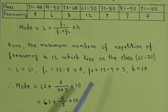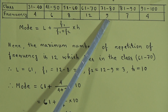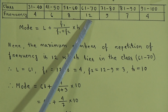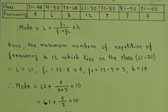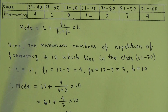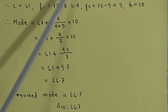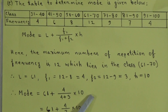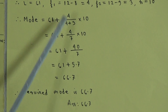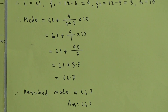H equals 10, the class interval. Putting the values of L, F1, F2, and H into the formula, after calculating we get 66.7. This is the answer to C number question. So the required mode is 66.7.